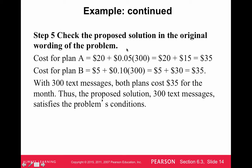To double-check: 5 cents times 300 is $15. $20 plus $15 gives a total cost of $35 for Plan A. For Plan B: 10 cents times 300 is $30, plus $5 gives $35. Both plans cost $35 at 300 texts. If you're going to use more than 300 texts, go with Plan B because it costs less per text. If fewer than 300 texts, go with Plan A because it's cheaper upfront.